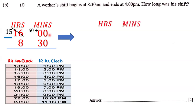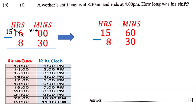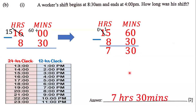Now we have our working expressed as 15 hours and 60 minutes on top, with 8 hours and 30 minutes below. Zero minus zero is zero. Six minus three is three. Then five minus eight — we can't do that, so we borrow from the one, which becomes zero, and this becomes 15 minus eight, which is seven. So it's going to be 7 hours and 30 minutes. The shift was 7 hours and 30 minutes.